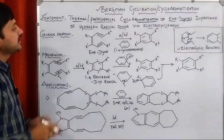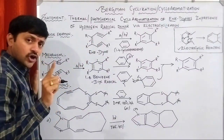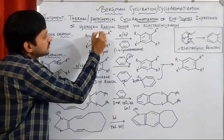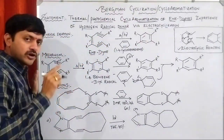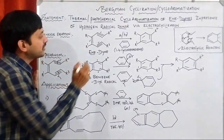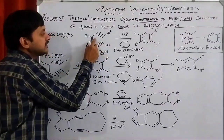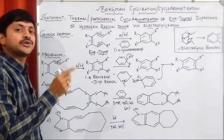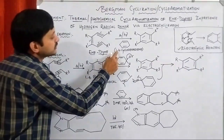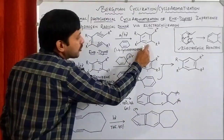In the general equation, we observe a pi bond — that is an alkene, represented as 'ene.' We also see two triple bonds. Triple bonds are commonly called 'ynes,' and having two triple bonds means it is a 'diyne.' This ene-diyne system undergoes thermal or photochemical reaction using a hydrogen radical donor to produce an aromatic compound.